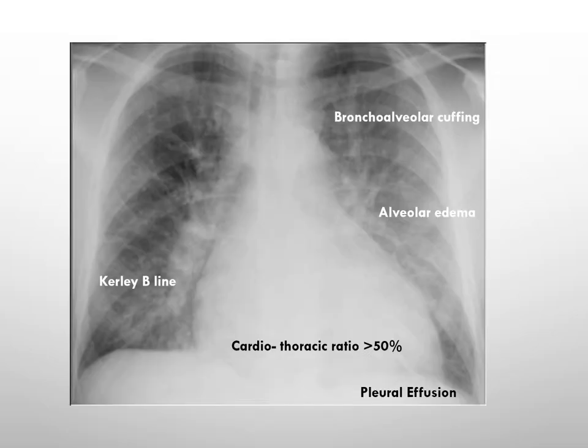Here is an example with positive findings. Tracheal deviation to the right is notable. Concerning observations include indications of pulmonary edema, bronchovascular markings, the presence of Kerley B lines, and alveolar edema. The cardiac shadow exhibits an indistinct outline with a cardiothoracic ratio exceeding 50%. Furthermore, blunting of the costophrenic angle implies the likelihood of pleural effusion. There are no apparent signs of fracture or lytic lesions. In summary, this chest x-ray strongly suggests a potential diagnosis of heart failure.